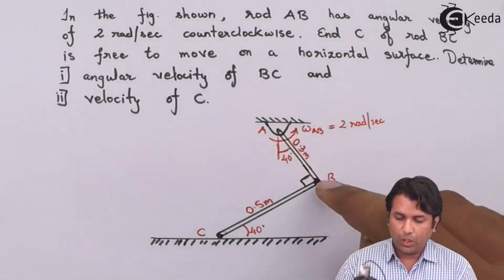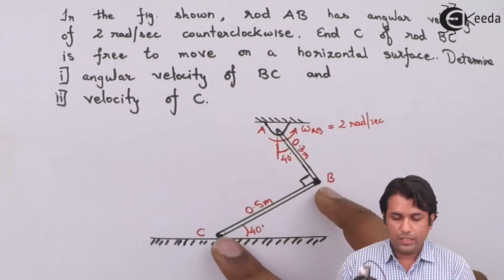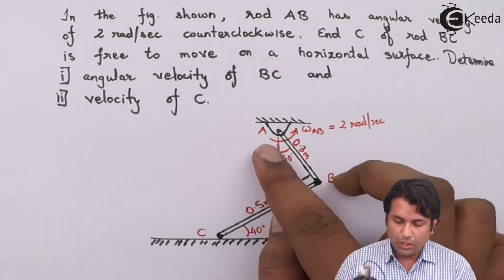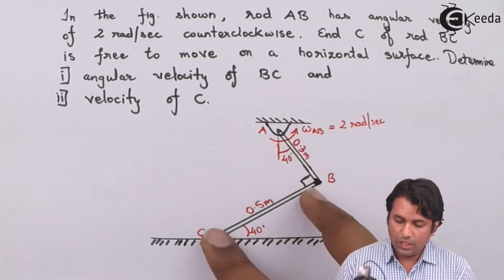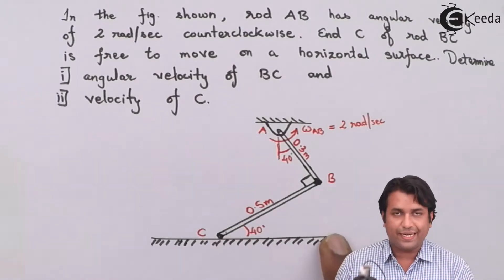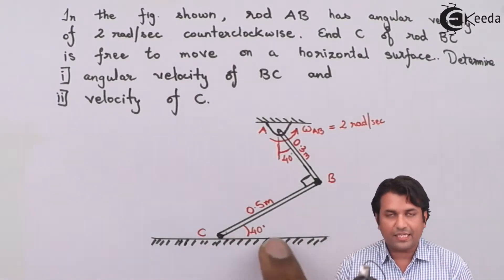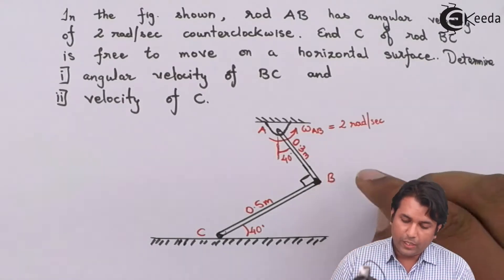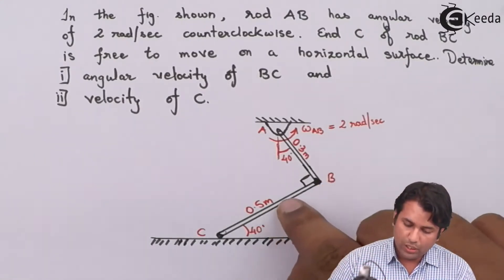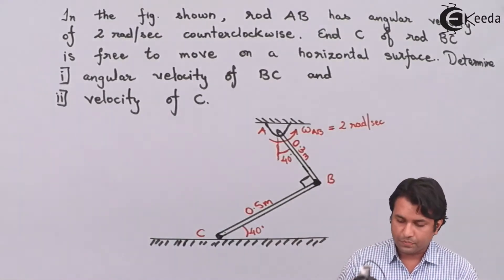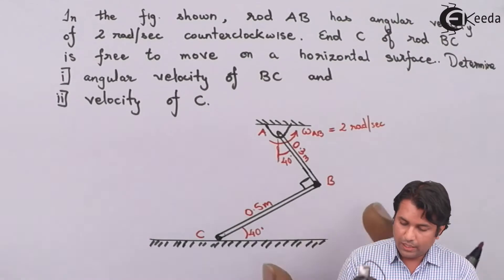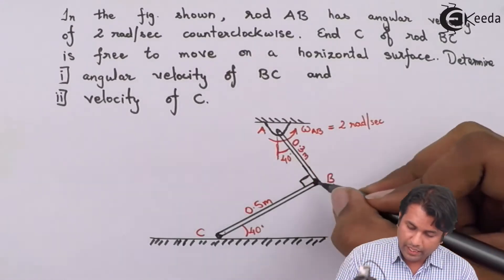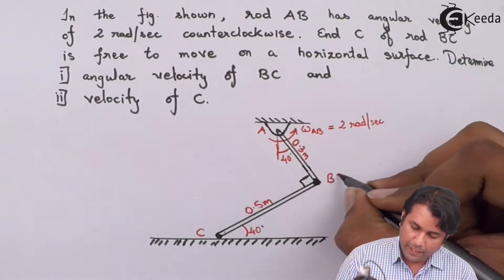Now we will try to understand this mechanism. When rod AB is going like this, rod BC is free to move on the surface. When rod AB is having a counterclockwise rotation, rod BC will move towards the right, creating velocity in that direction. At point B, the velocity will be perpendicular to rod AB.